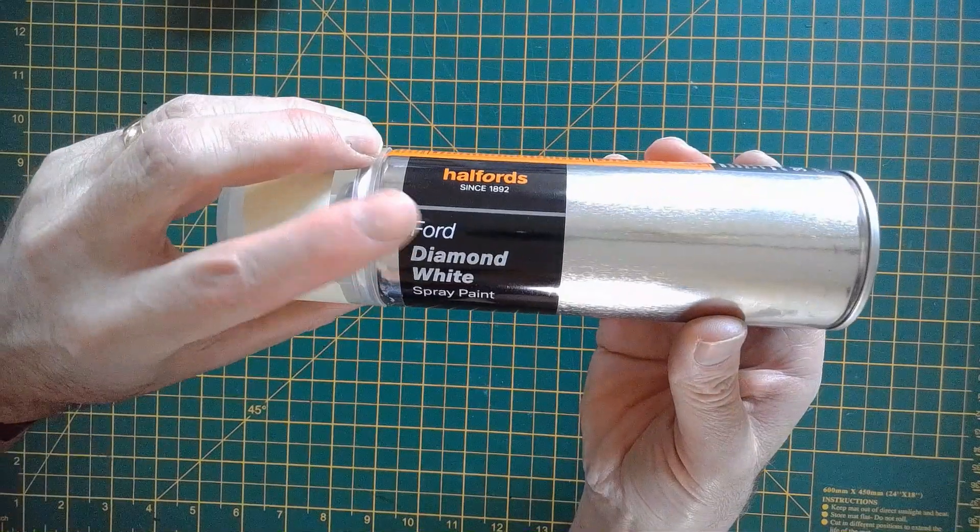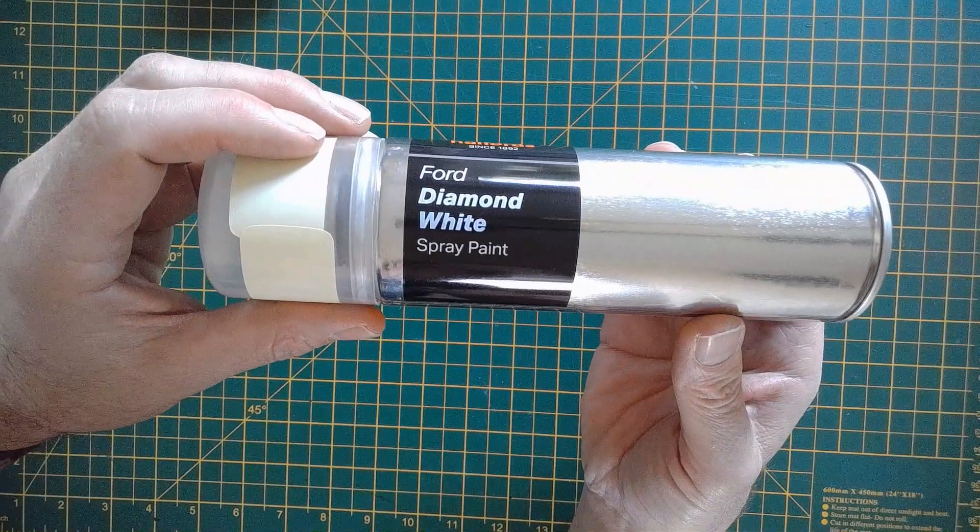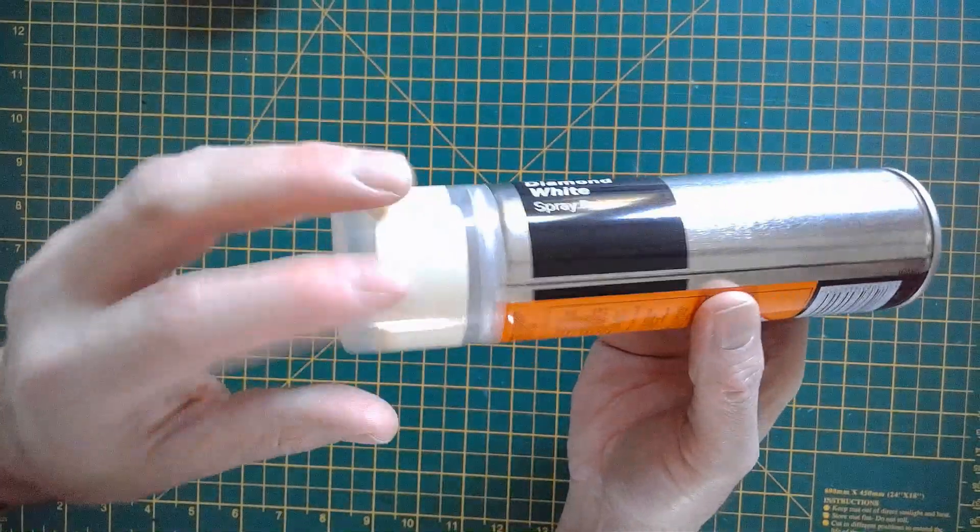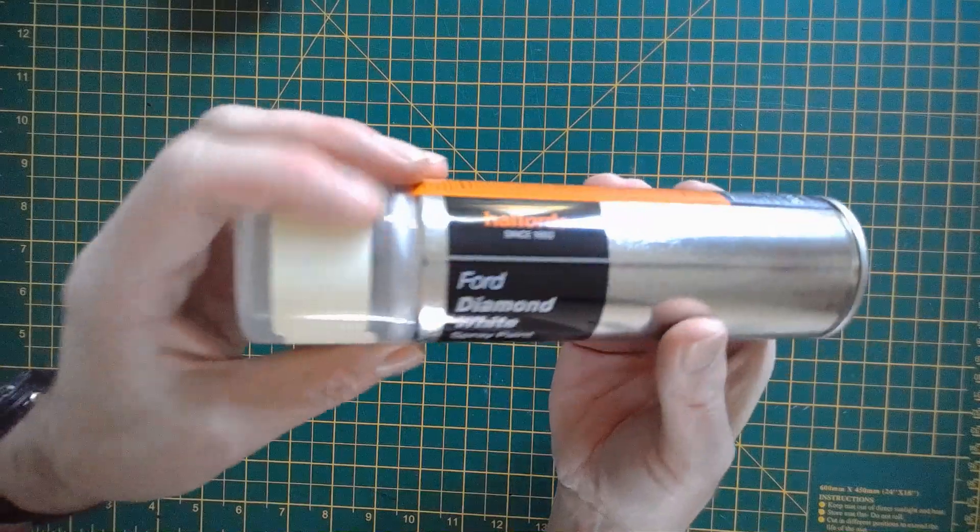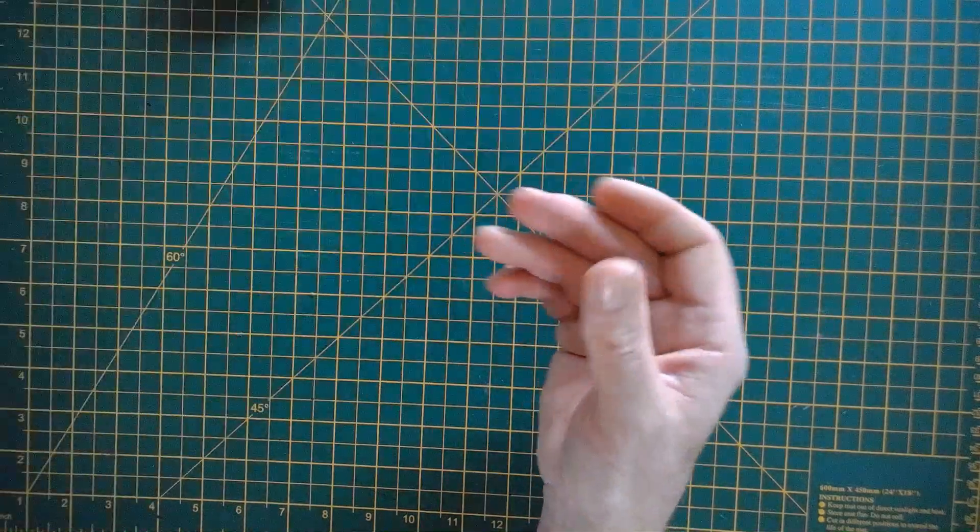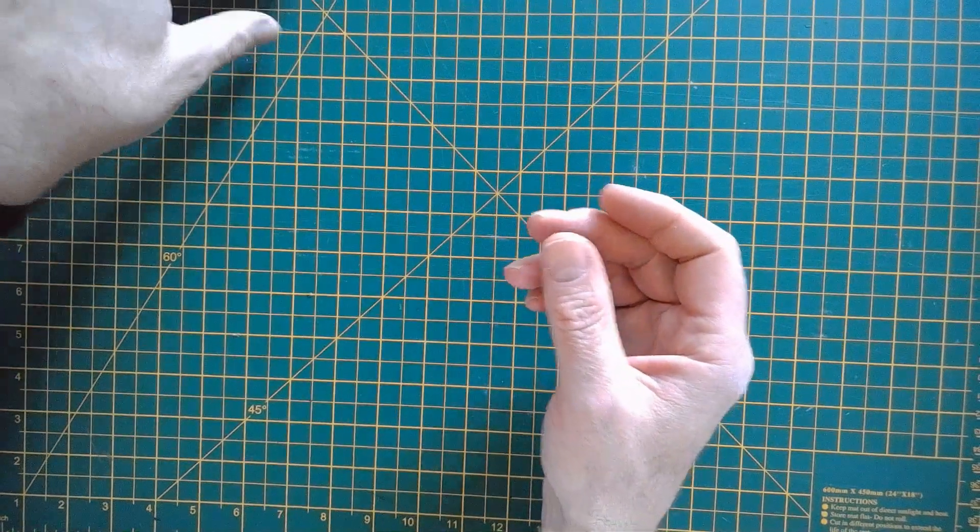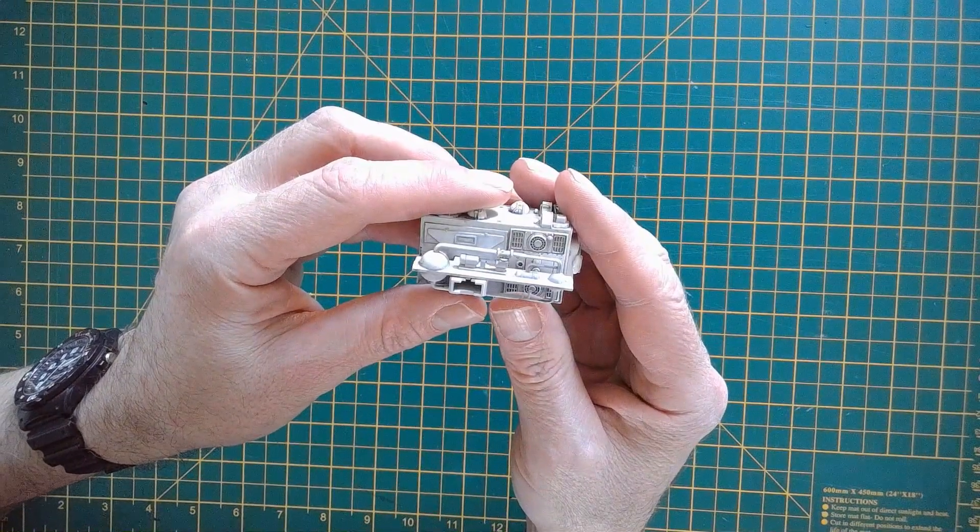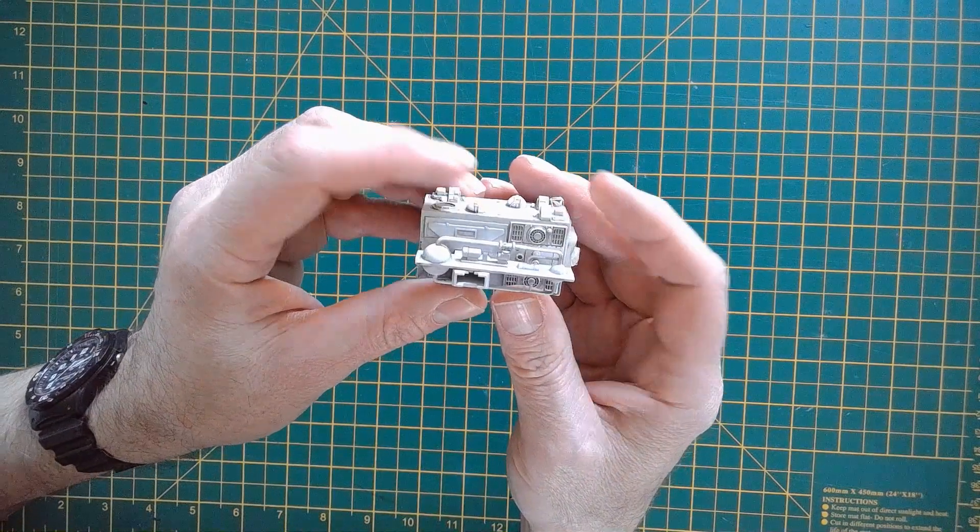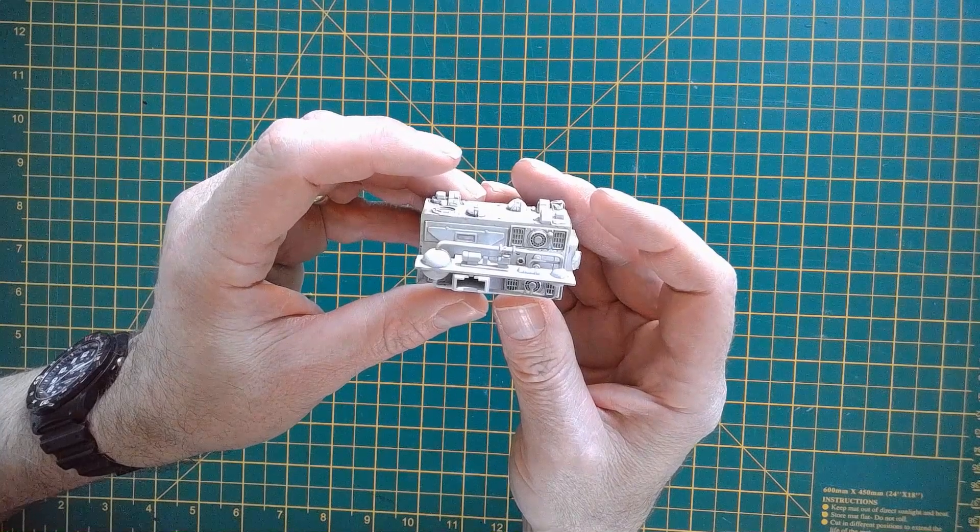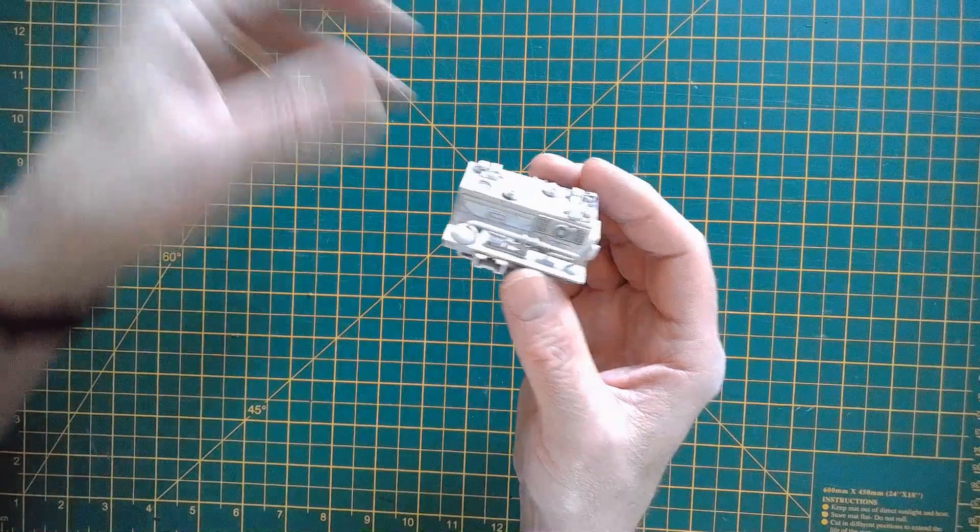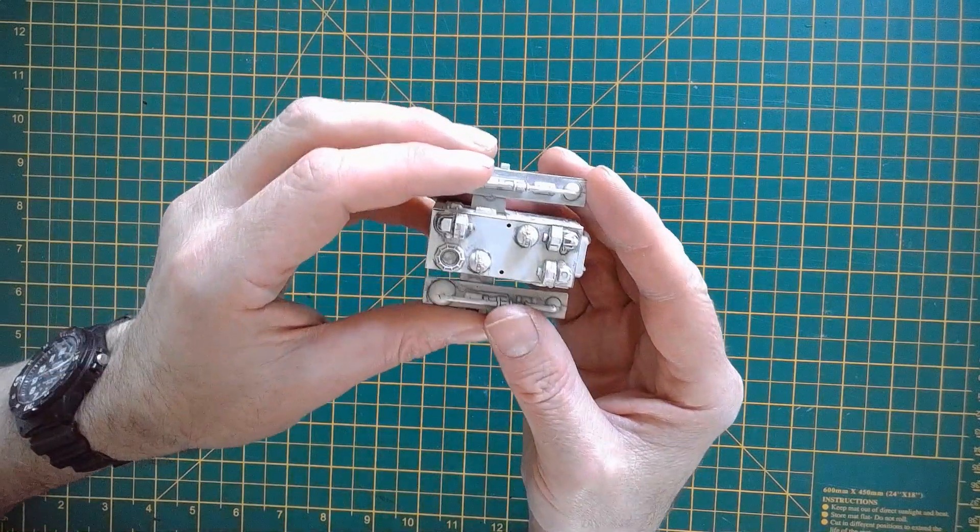I just went down to my local Halfords and picked one up. It's a creamy white. In fact, it looks too creamy when you just see it like that or alongside another white, but it works fine. So what I've done here is I sprayed it in gray primer, sprayed it in white primer, and then base coated it in the Diamond White.